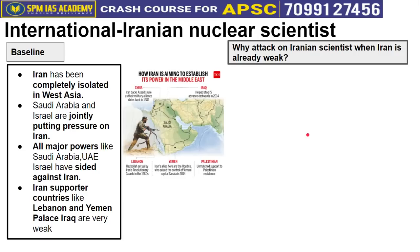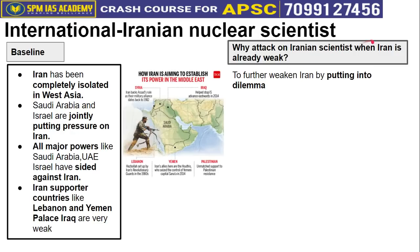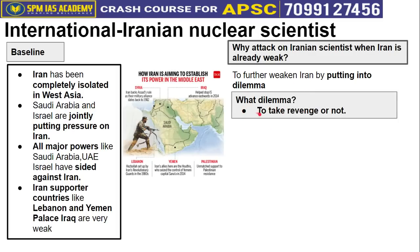Now, since Iran is already weak, why did Israel feel the need to attack Iran's nuclear scientist? This is a very strategic approach to further weaken Iran by putting it into a dilemma. The dilemma is: should Iran take revenge or not? This confusing state — what to do, what not to do — is precisely the trap Israel has set.